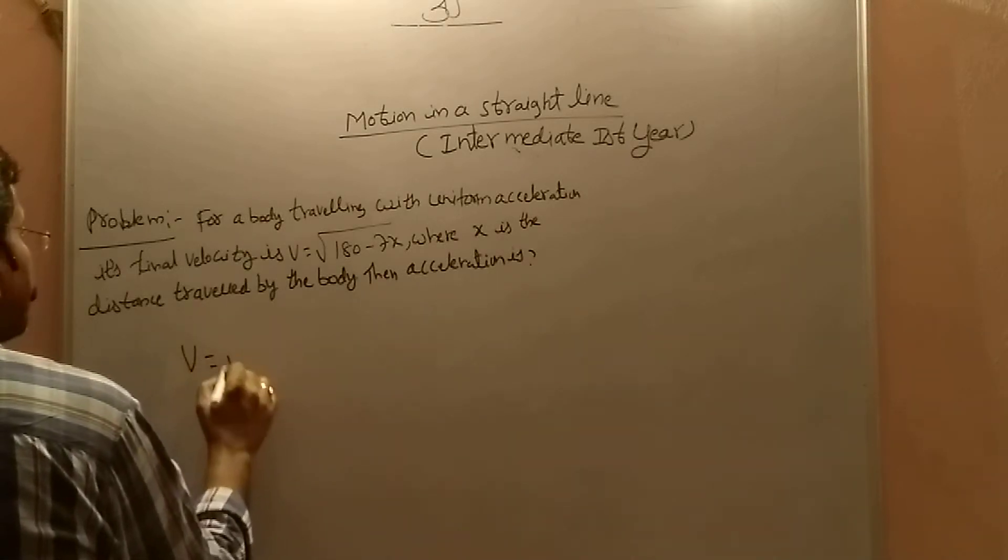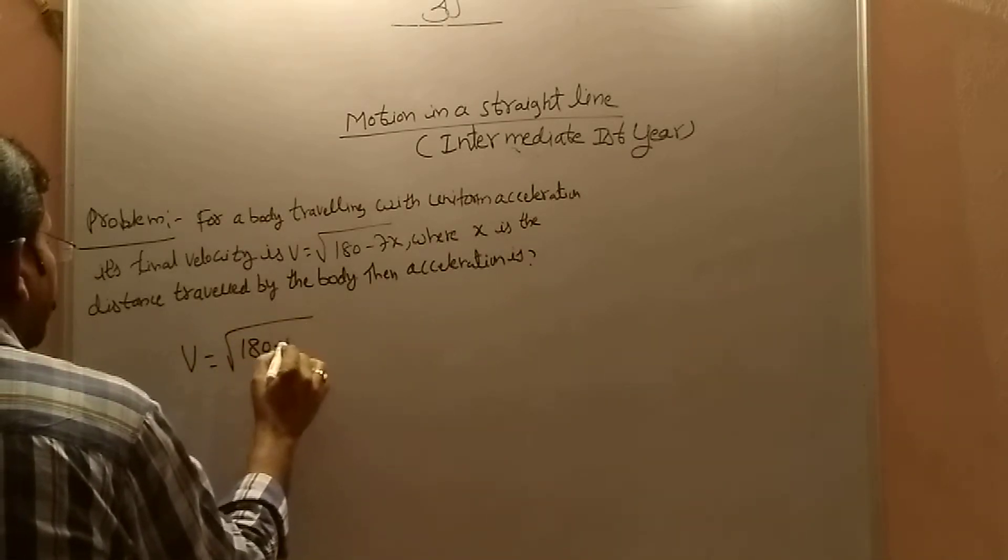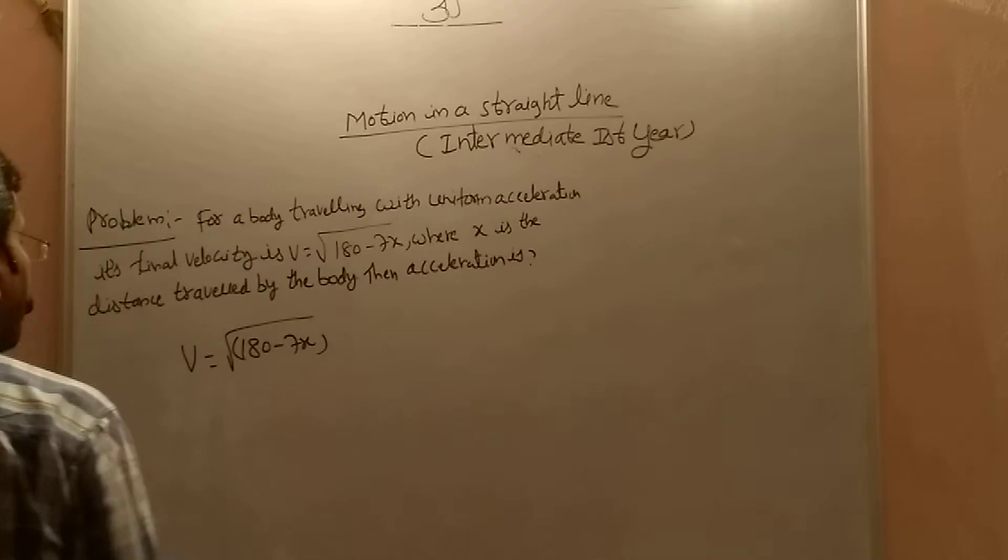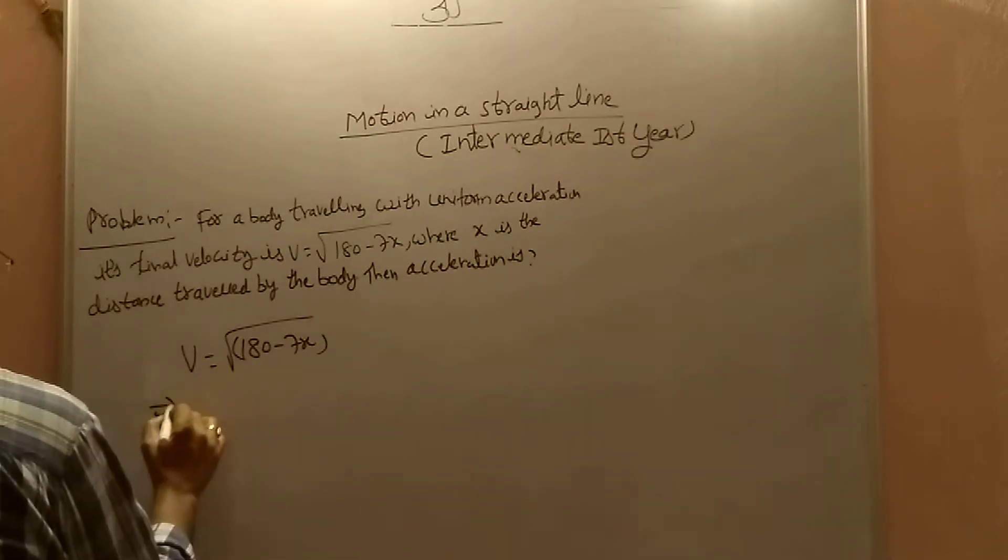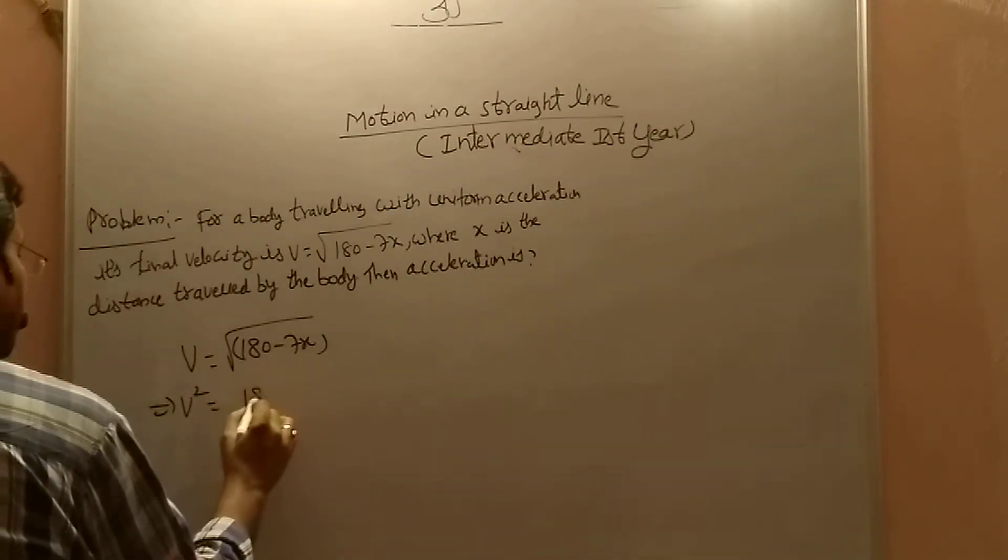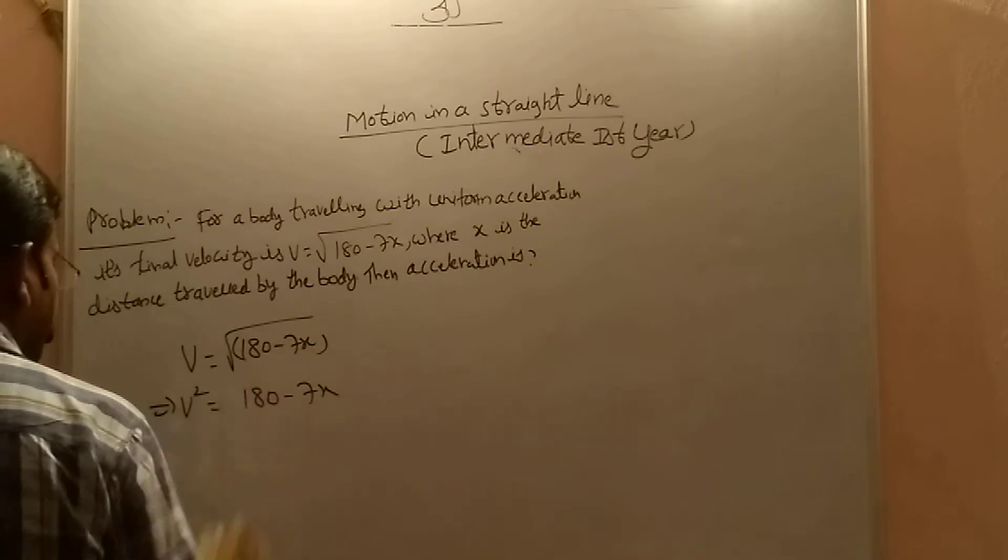So your velocity equation v equals to square root of 180 minus 7x. Now I am taking square both sides. Then v square equals to 180 minus 7x.